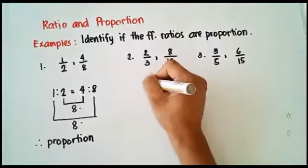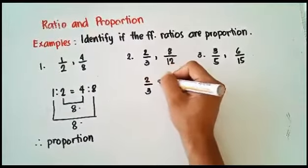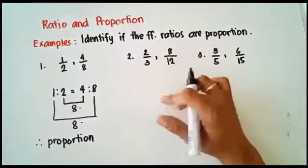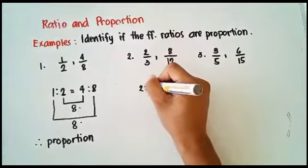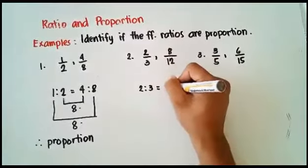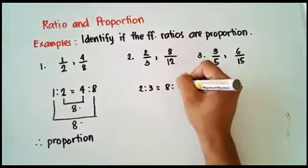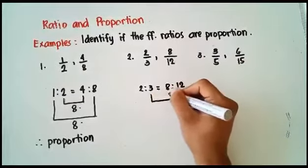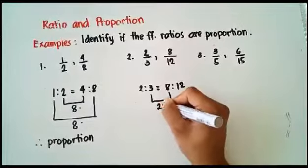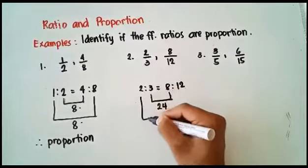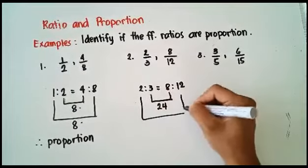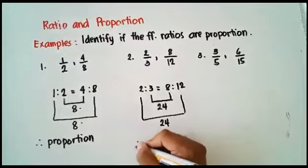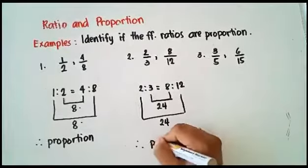For number two, we have 2/3 and 8/12. So 2 is to 3 is equal to 8 is to 12. If we multiply the means, 3 times 8 is 24. Then 2 times 12 is also 24. Therefore, number two is a proportion.